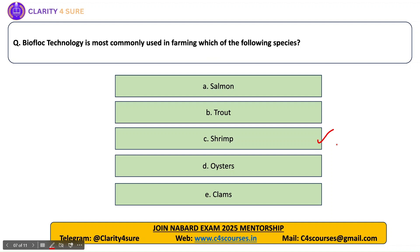Oysters and clams have completely different feeding habits — they rely on phytoplankton and also cannot be grown using biofloc technology. So shrimp, tilapia, and other bottom feeders are preferred in this technology.